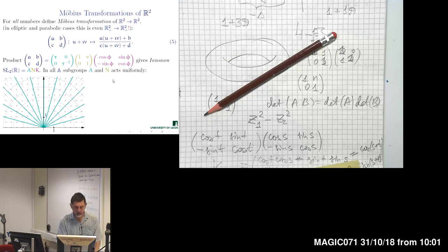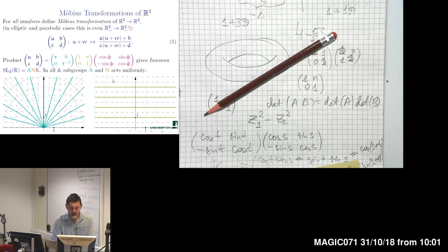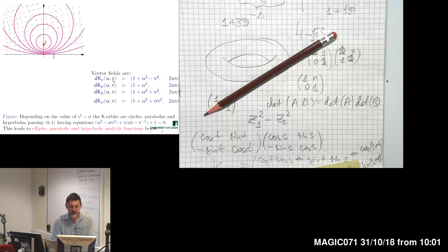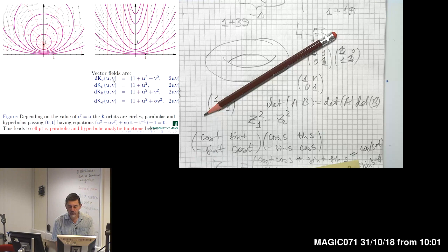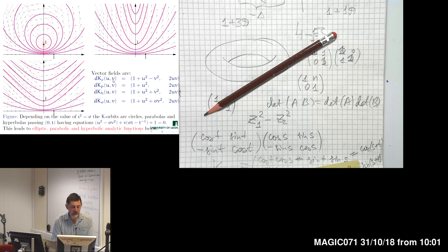We use a decomposition of SL2R into three one-dimensional subgroups: N, continuous subgroup A, and K. A acts as scaling, N acts as horizontal shift, and the action of K depends on the type of hypercomplex number we are using: it is elliptic for complex numbers, parabolic for dual numbers, and hyperbolic for double numbers.